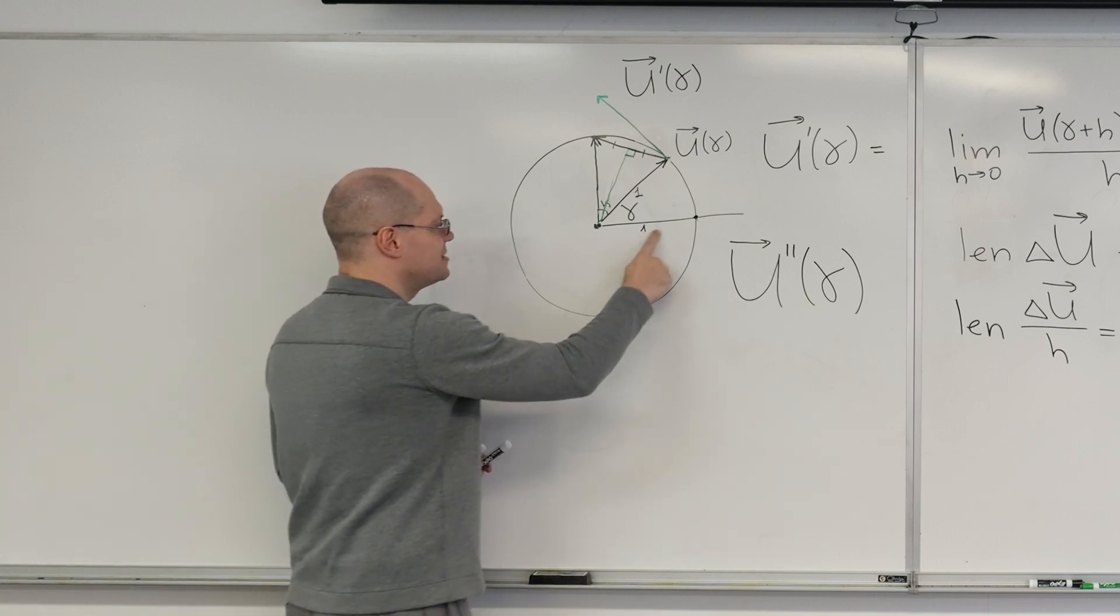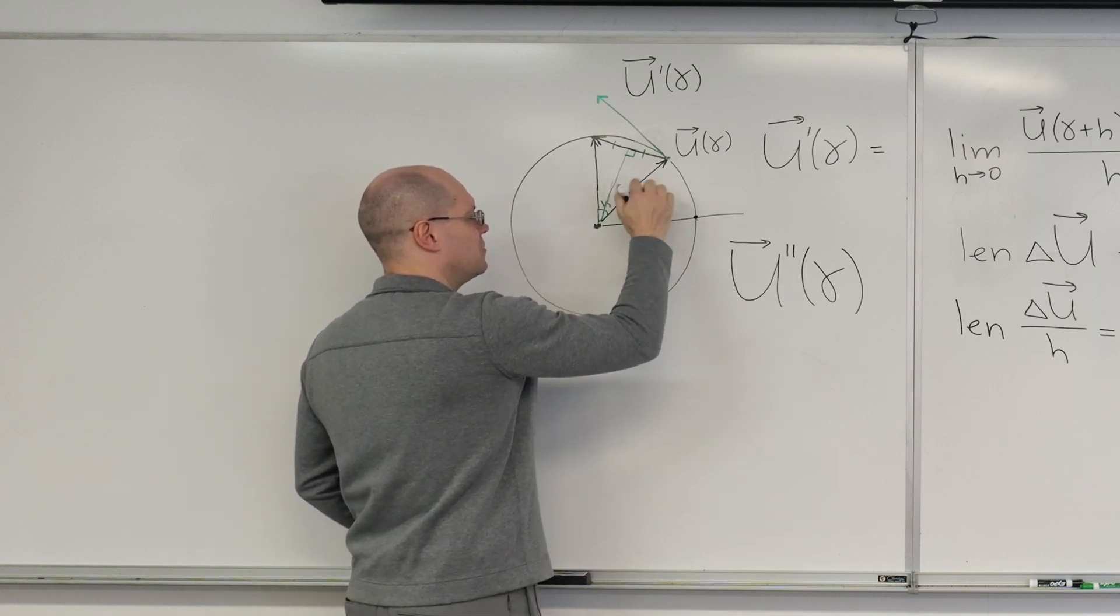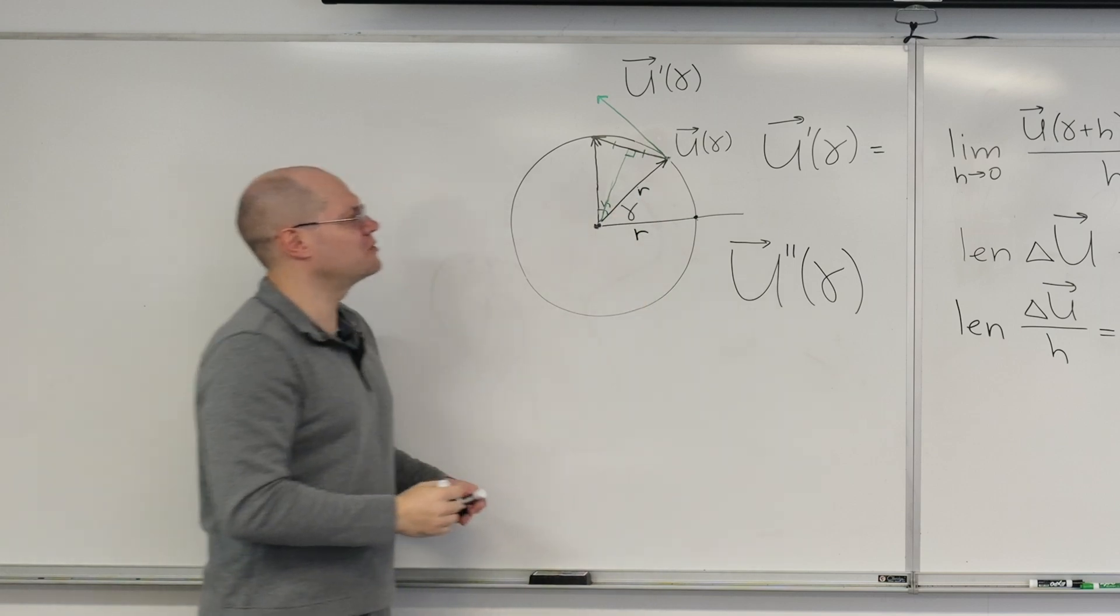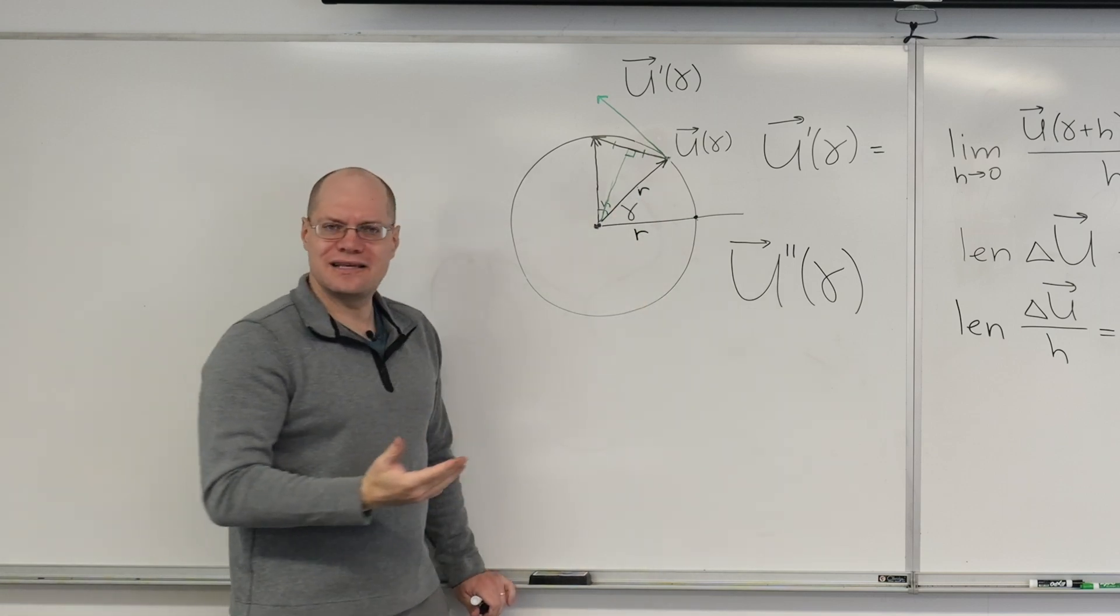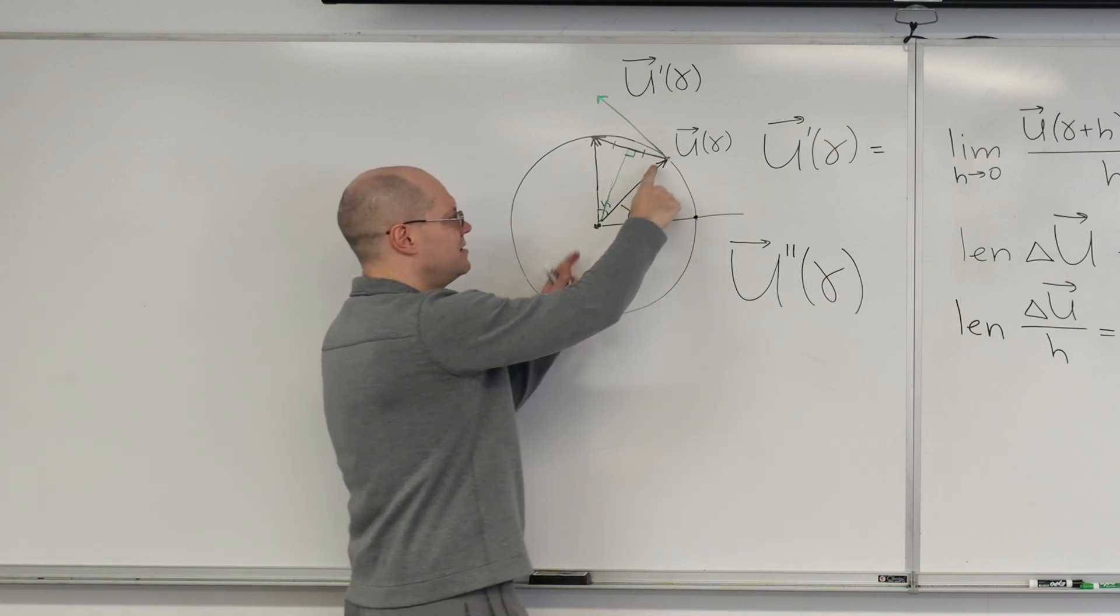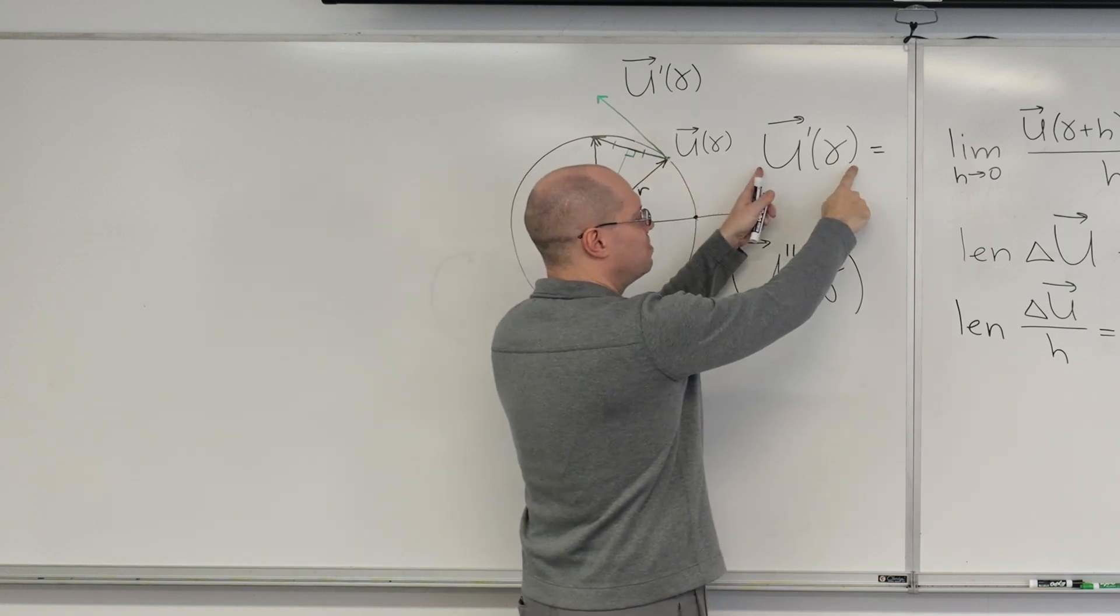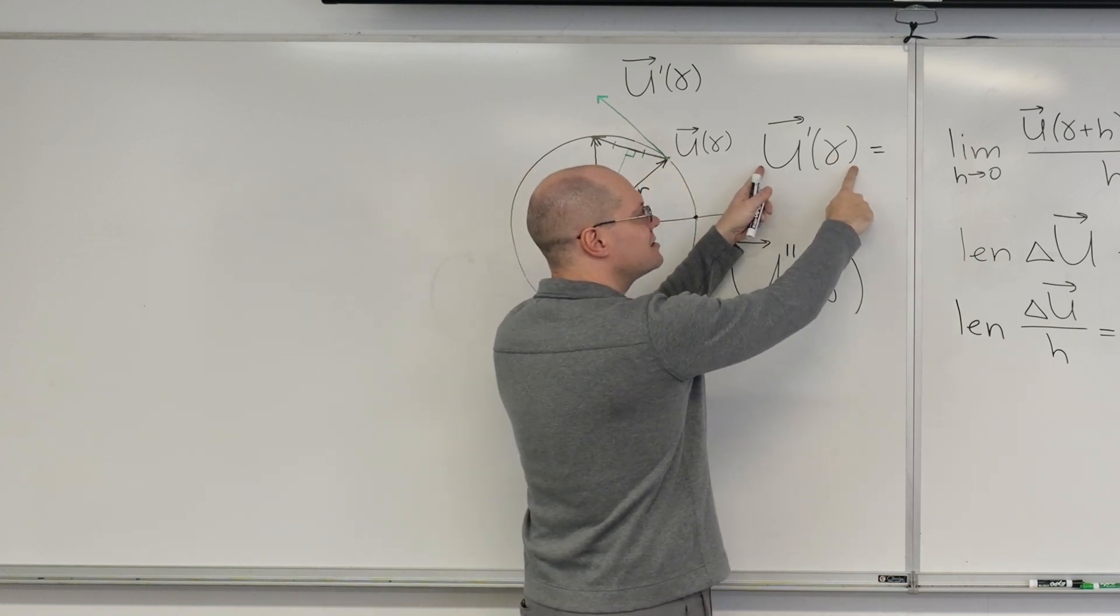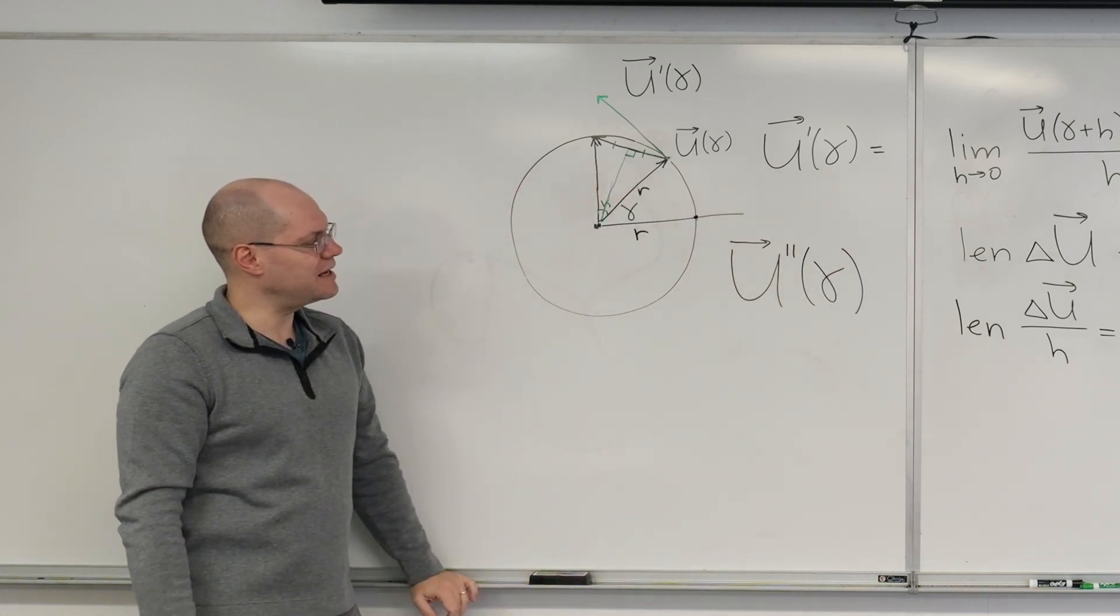So what would happen if instead of length one, it was length R. What would change? Well, I just think everything gets multiplied by R. So this U of gamma is length R instead of length one. And now U prime of gamma is length R and so on. Yeah. So that's what changes. And then this will be length R. And all of the other ones.